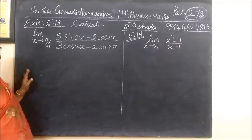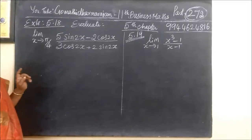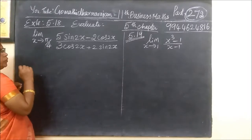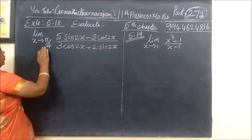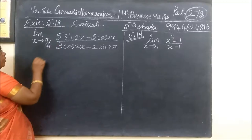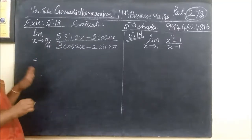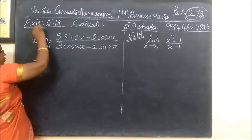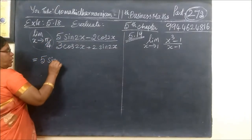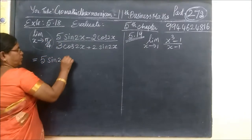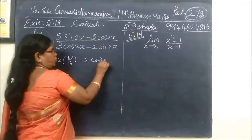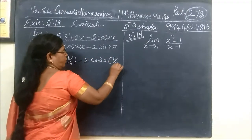Question number 5.18 — we do this one. The limit extends to 5π/4. Apply the limit directly. So 5 times 2: x is 5π/4 minus 2·cos(2x) — wherever we get that.